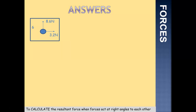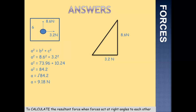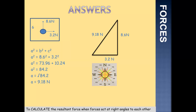Final question, question 6: we've changed it around with some decimal figures, but our approach doesn't change. We have 8.6 newtons to the north and 3.2 newtons to the east. We draw our triangle — 8.6 newtons to the north, 3.2 newtons to the east — giving a hypotenuse acting in the same direction as the resultant force. 8.6 squared plus 3.2 squared: 8.6 squared is 73.96, 3.2 squared is 10.24. Adding those together gives us 84.2. The square root of 84.2 gives us 9.18 newtons. The force is going to the north and to the east — a northeast direction. Our resultant force is 9.18 newtons to the northeast.